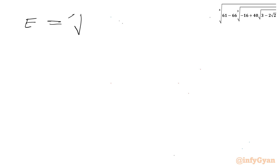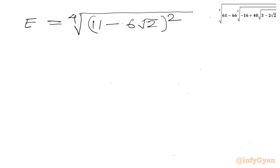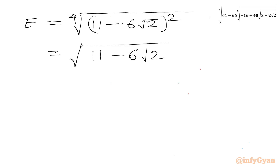Since the 4th root of a perfect square gives a square root, the 4th root and the square cancel partially, leaving E = √(11 − 6√2).